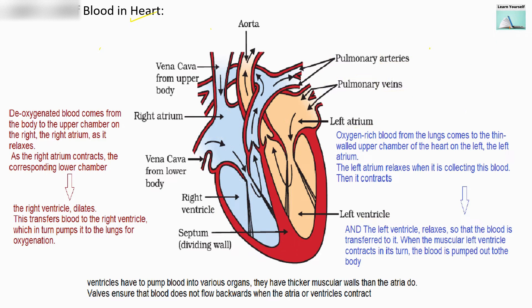Now let us get into the detail, starting with the left side — specifically the left atrium. Oxygen-rich blood from the lungs comes to the thin-walled upper chamber of the heart on the left, the left atrium. Once the blood comes in, the atrium relaxes and fills with blood. Once it receives the blood, it will contract and push the blood out. As we can see in the diagram, blood goes from the atrium to the ventricle.